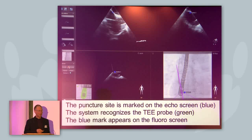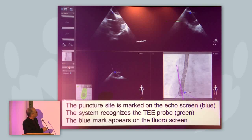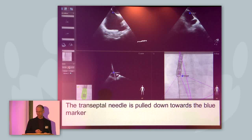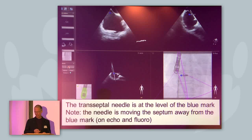This shows you an example of transseptal puncture. Marks are made on the echo screen where you want to puncture the interatrial septum, and this mark then appears on the fluoro screen and guides you during the procedure. At this point the transseptal needle is pulled down towards the blue marker, and then the transseptal needle is at the level of the blue mark.